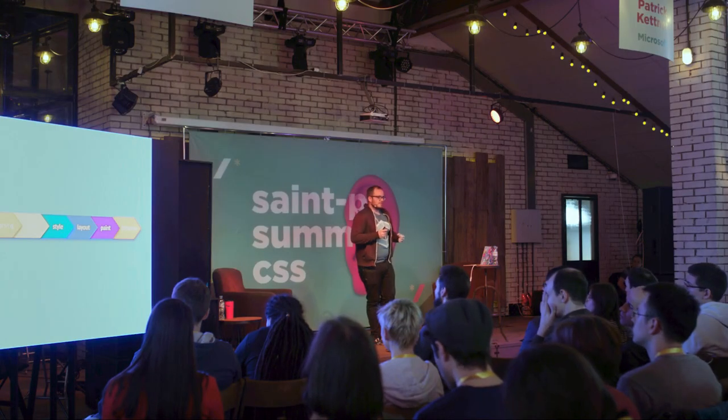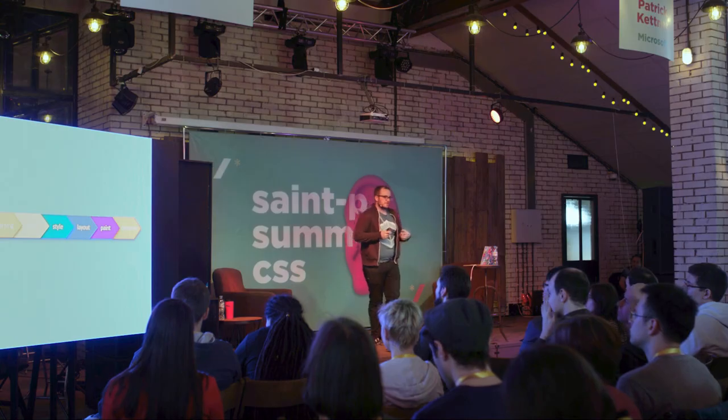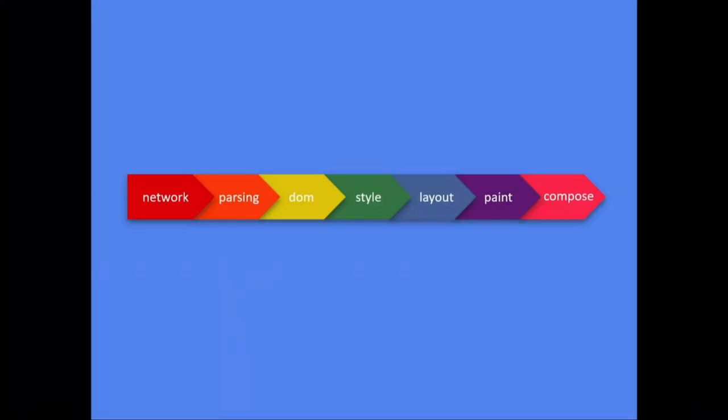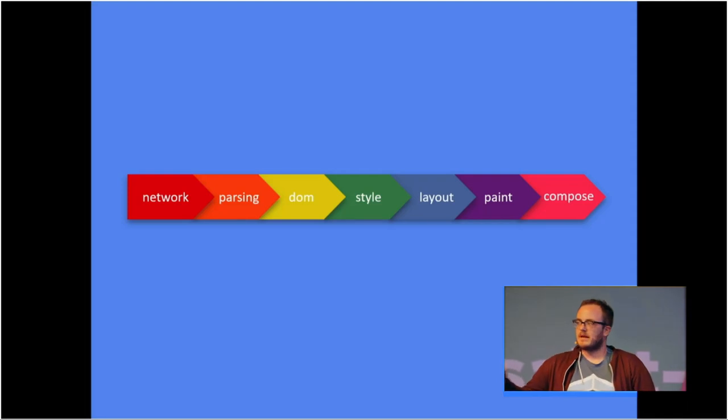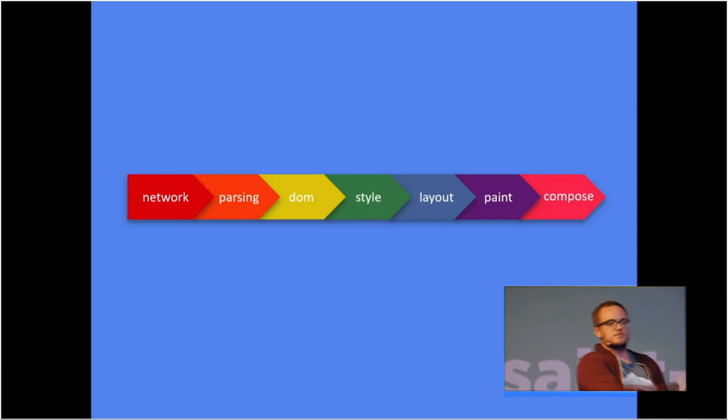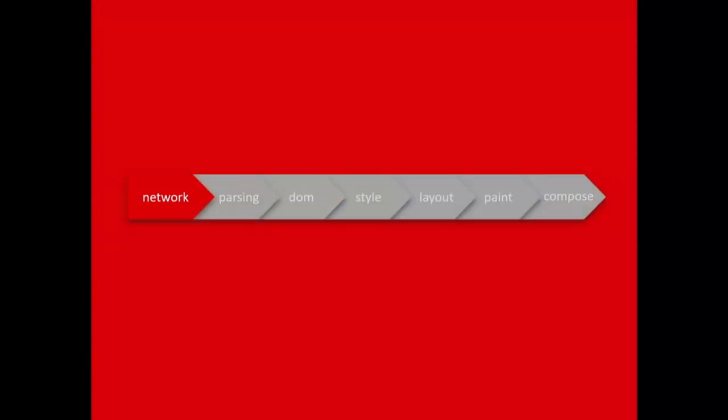This pipeline can be a little different from browser to browser, but ultimately these same steps are the same. This is what actually powers the browser internally and takes your code — the string files — and ultimately paints those pixels on the screen. The first step is the network step, where we download a file. Network can also include local files — it's just the loading of a file.